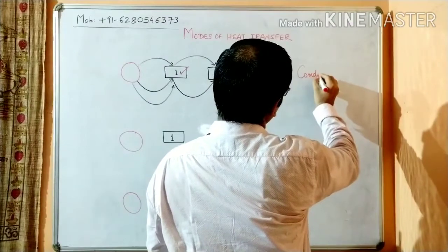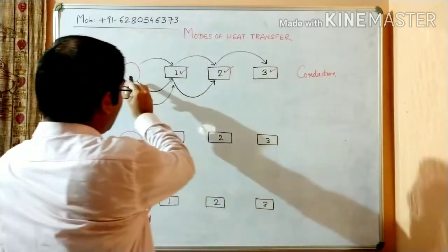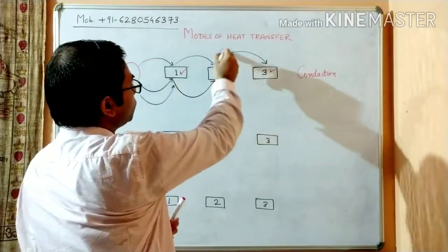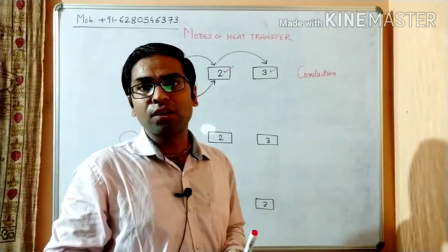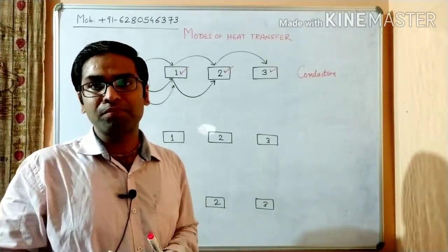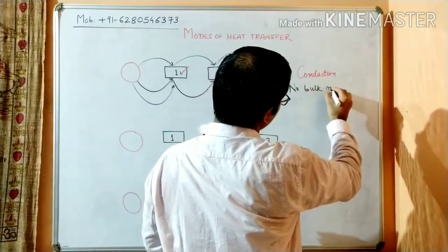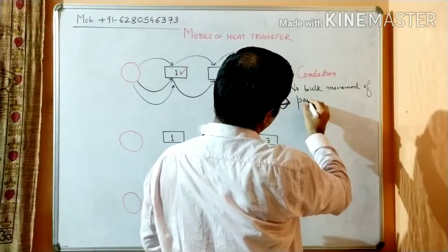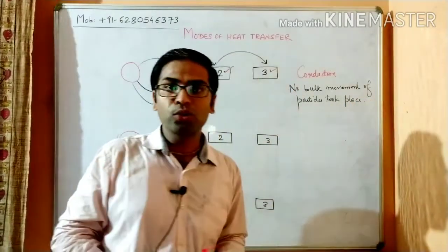So this is nothing but the conduction mode of heat transfer. Why conduction? Because the chocolate — the heat — starts at the source, here with me, and propagates through persons one, two, and three. It has propagated through the material, through the chain of molecules, but none of the molecules got permanently displaced from their position. So no bulk movement of particles took place. This is conduction.